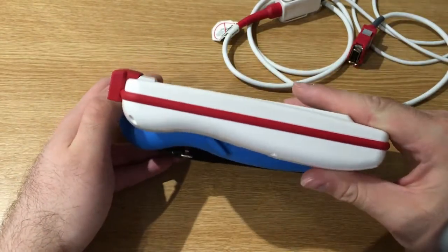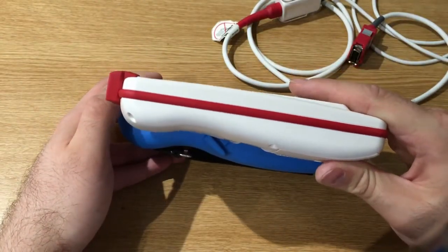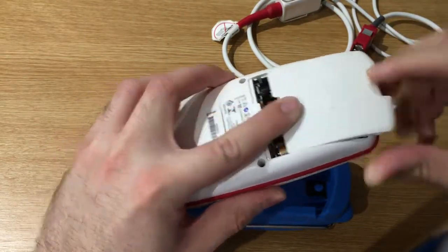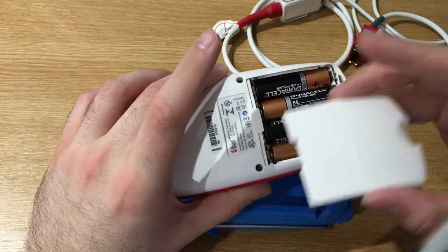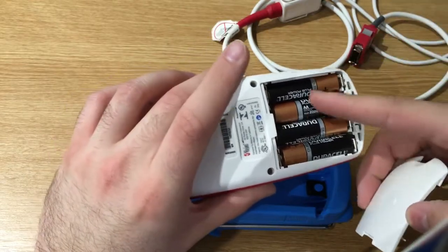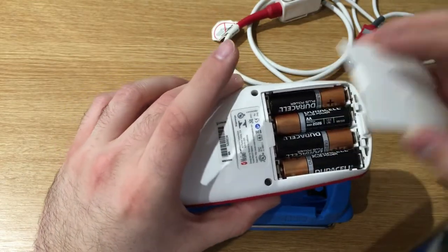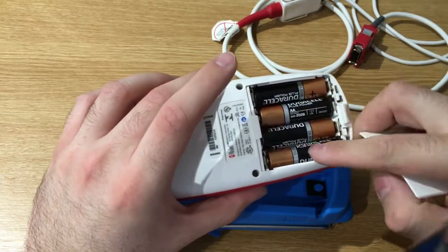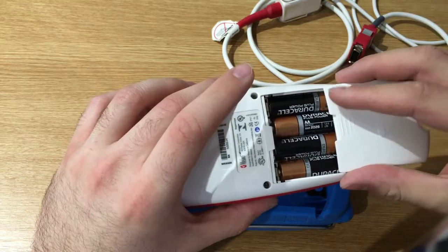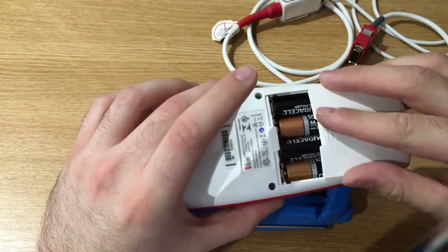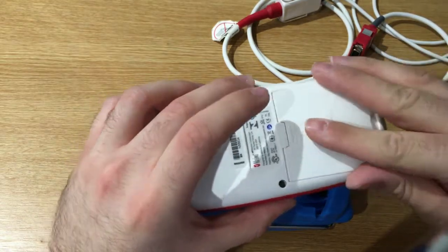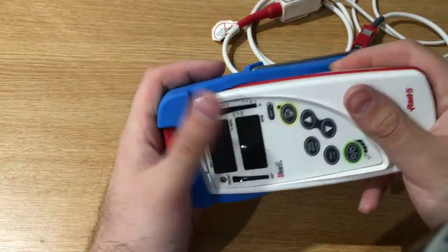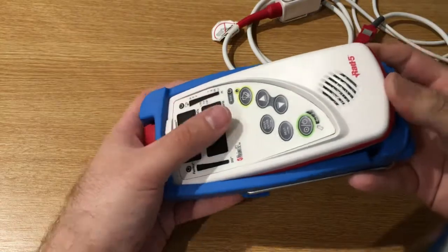On the back there is this battery cover. We can just press this button and slide it, and here there is the battery, with four AA batteries, so no proprietary battery. This is another huge plus. They are pretty easy to find on the market, pretty easy to replace. It's quite easy to put it back in the cover as well.